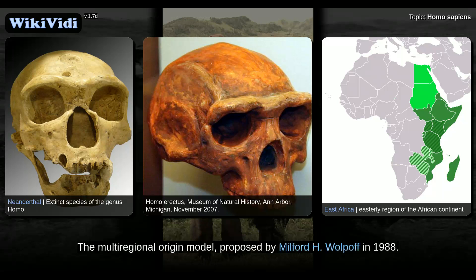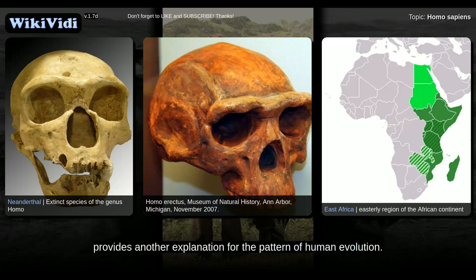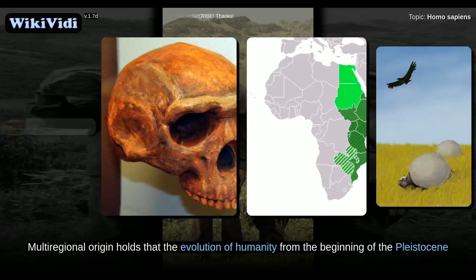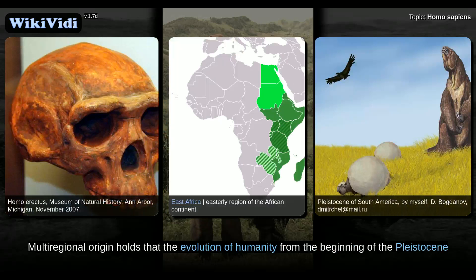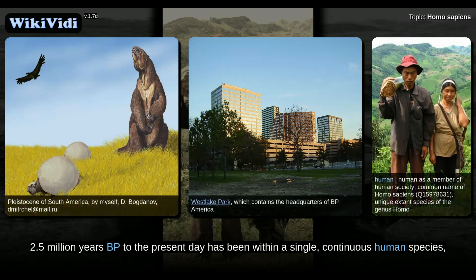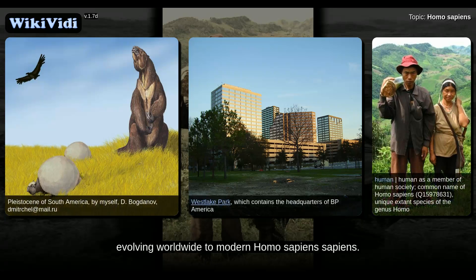The multi-regional origin model, proposed by Milford H. Wolpoff in 1988, provides another explanation for the pattern of human evolution. Multi-regional origin holds that the evolution of humanity from the beginning of the Pleistocene, 2.5 million years BP to the present day, has been within a single, continuous human species, evolving worldwide to modern Homo sapiens sapiens.